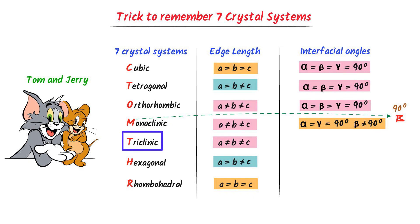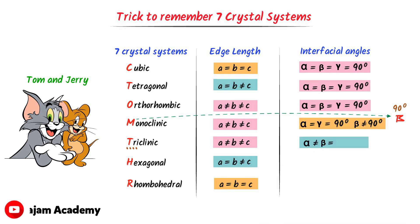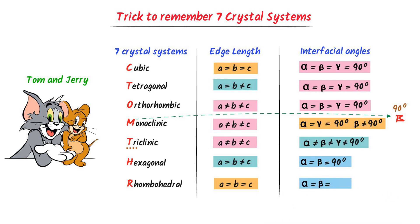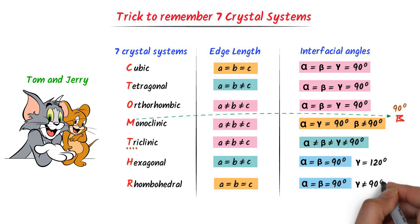For triclinic, the word 'tri' reminds us that all three angles are unequal: alpha is not equal to beta, and beta is not equal to gamma. For hexagonal, alpha equals beta equals 90 degrees, and gamma equals 120 degrees (not 90 degrees). Using this trick, we can super-fast learn and remember all seven crystal systems.